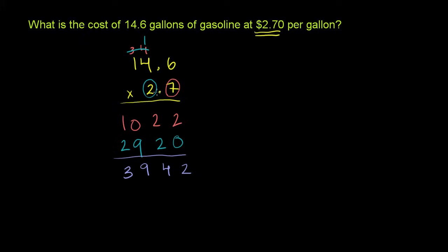But this wasn't 146 times 27. It was 14.6 times 2.7. So now we have to worry about the decimals. We just count how many numbers are sitting behind decimals. We have one right there and a second one right there. So our product has to have two numbers to the right of the decimal. So one, two, stick it right over there. So for 14.6 gallons of gas at $2.70 per gallon, it's going to cost $39.42.